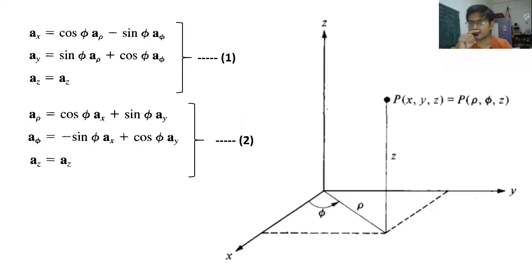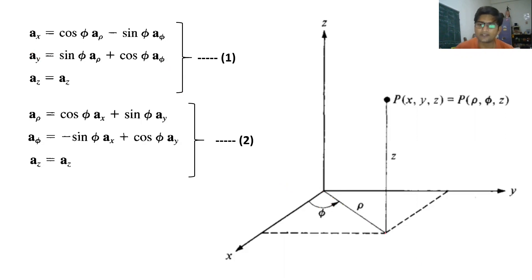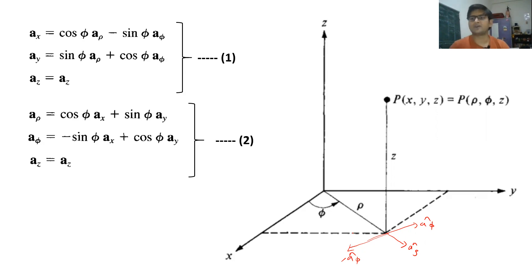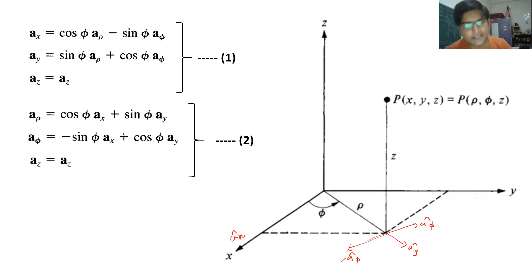Similar to converting point values, we can also convert unit vectors between Cartesian (a_x, a_y, a_z) and cylindrical (a_rho, a_phi, a_z) systems. In the diagram, a_rho points radially outward, and a_phi points along the tangent. The direction of a_x can be decomposed into contributions from a_rho and a_phi. The angle between a_rho and the x-axis is phi, and since the tangent is 90° to the radius, related angles can be identified geometrically.